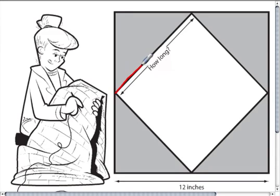So how long is this length right here if we know that we have a square on the outside that is 12 inches by 12 inches?